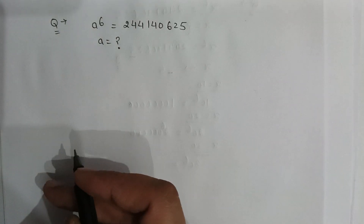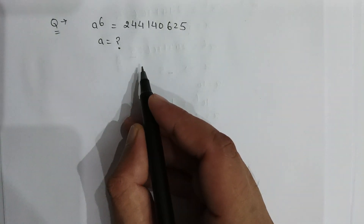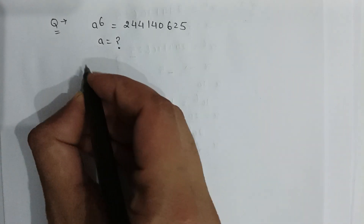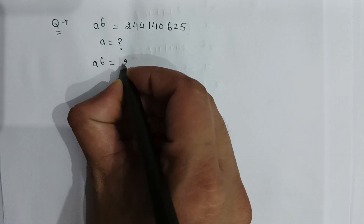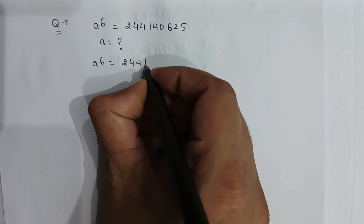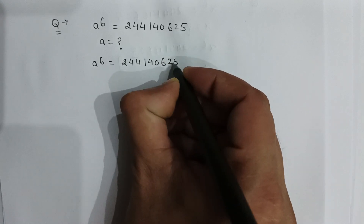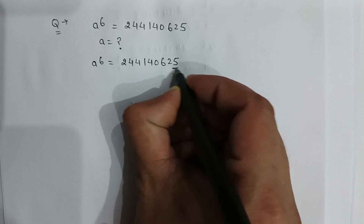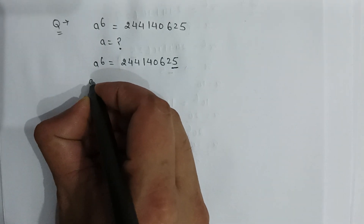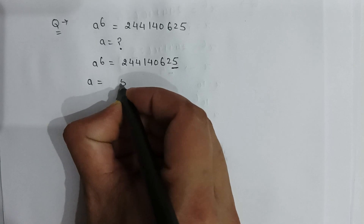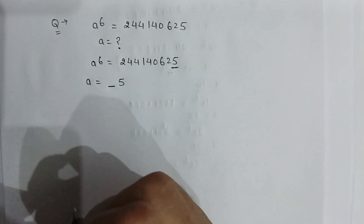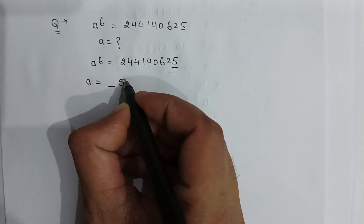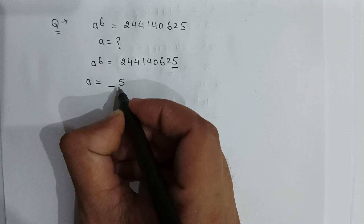Here is a very nice problem. a to the power 6 is equal to 244140625. We can clearly see that the last digit of this number is 5, so we can comment on the value of a — the last digit of a will be 5.